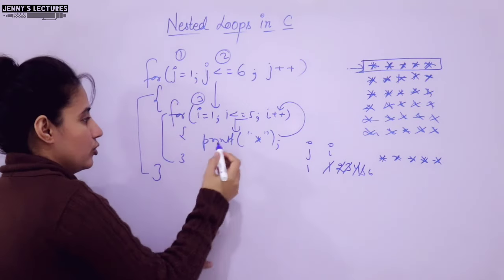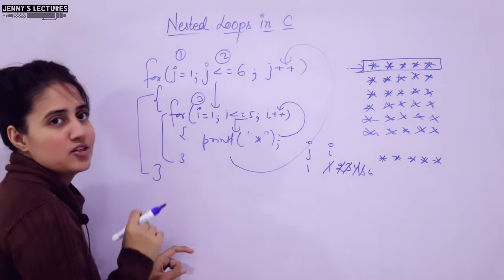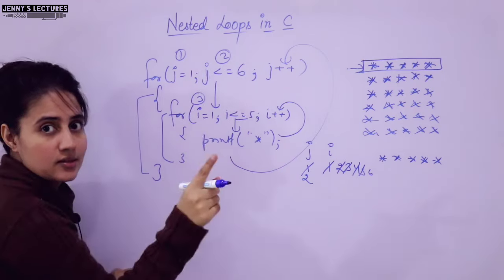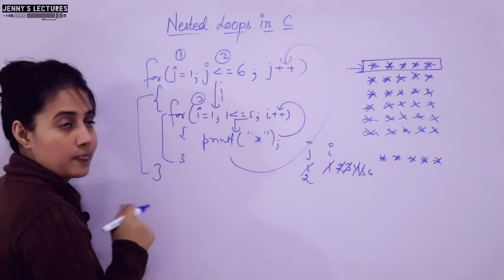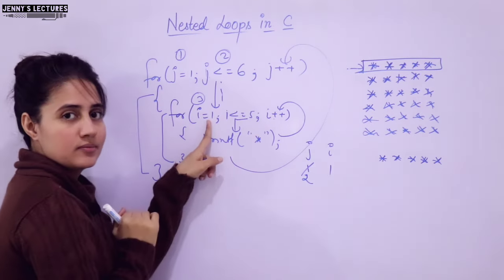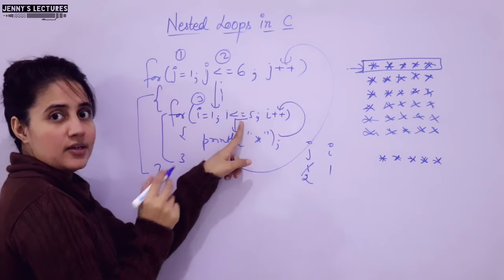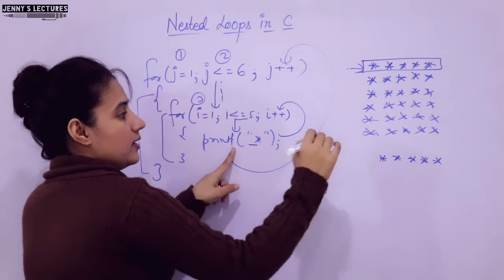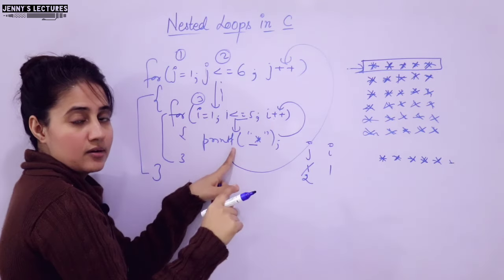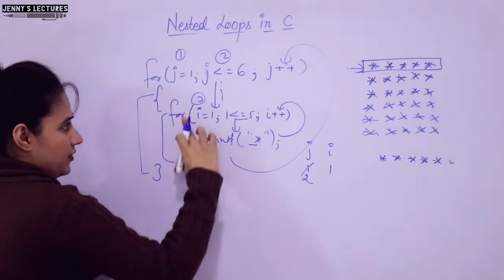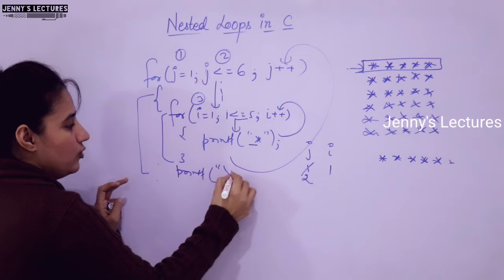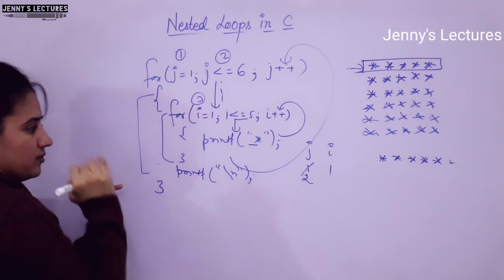Now where does control go? We are still inside the outer loop. So now control will go to j++. j becomes 2. Is this condition true? Yes. Again, control enters the inner loop. Now again i is initialized to 1 — i would be re-initialized to 1. Is 1 <= 5? Yes, condition true, it enters, and prints the star. But I want to print each line's stars on a separate line, so after this inner for loop you can write printf with '\n' for a new line.